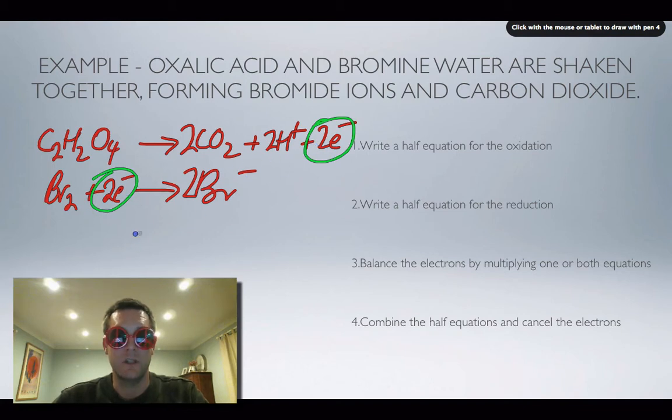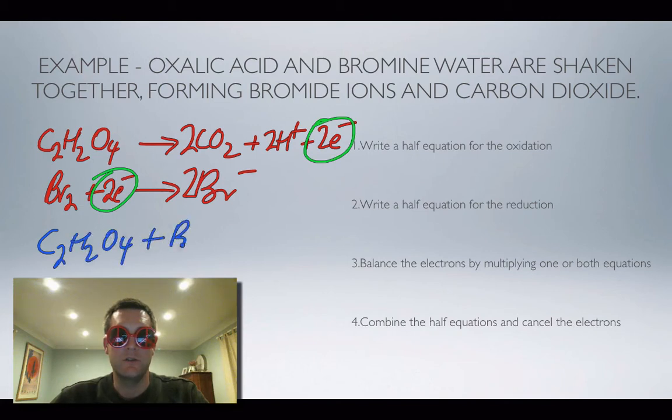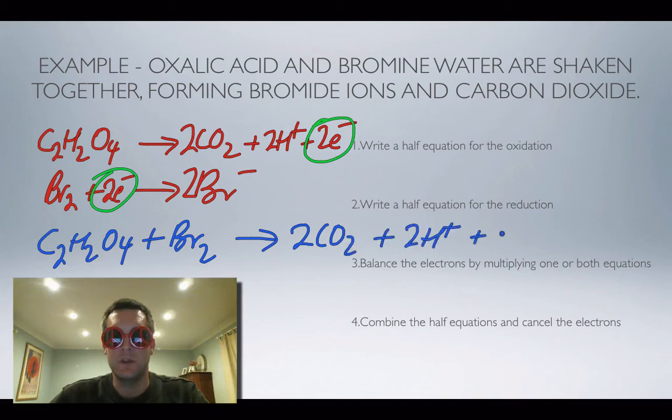They're on different sides of the half equation so that's a good start, and I'm going to have C2H2O4 and Br2. Remember I'm just putting all the reactants together and now I'm putting all the products together, so that's two CO2 and two H plus and two Br minus.